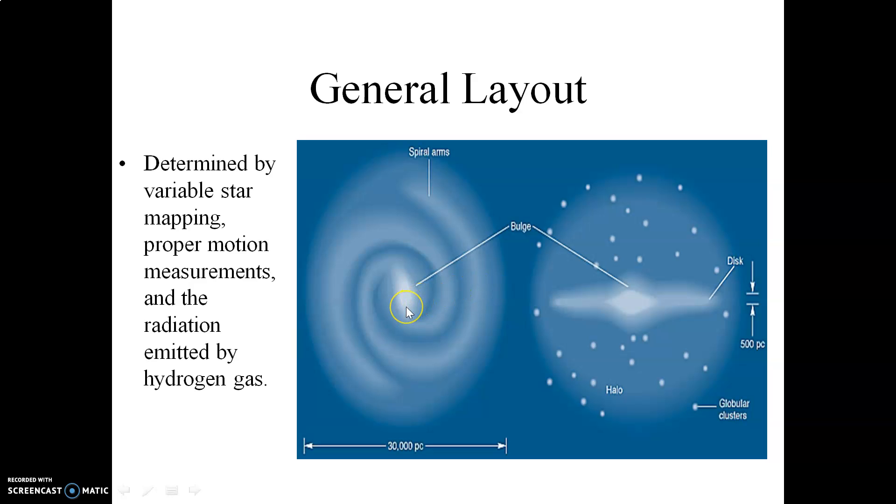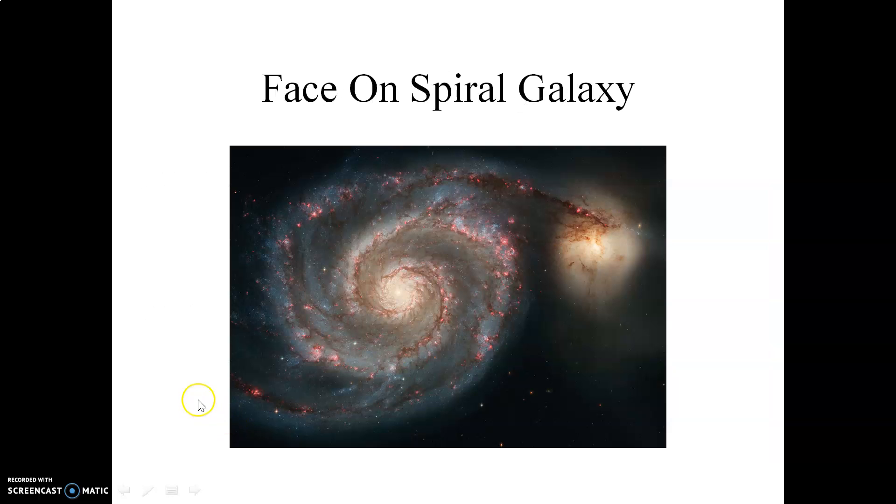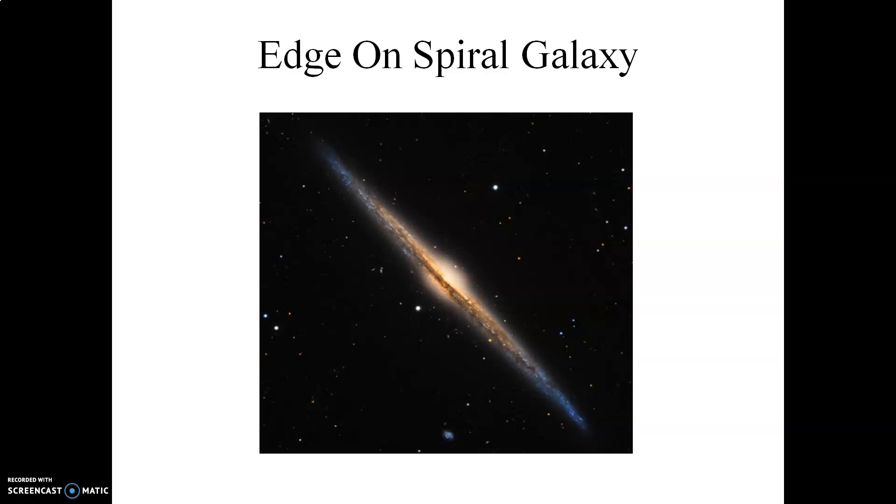If you can then take the Milky Way galaxy and look at it edge-on like so, you would then see this distribution here. Here's the disk in the Milky Way. Here's the central bulge. And then you have the globular clusters more or less spherically distributed in a halo around the galactic center. Here's a beautiful photograph of a face-on spiral galaxy. This is M51. And then here's an edge-on photograph of a beautiful spiral galaxy as well.